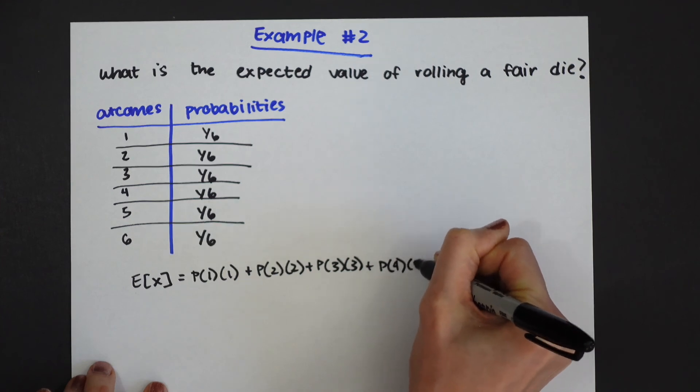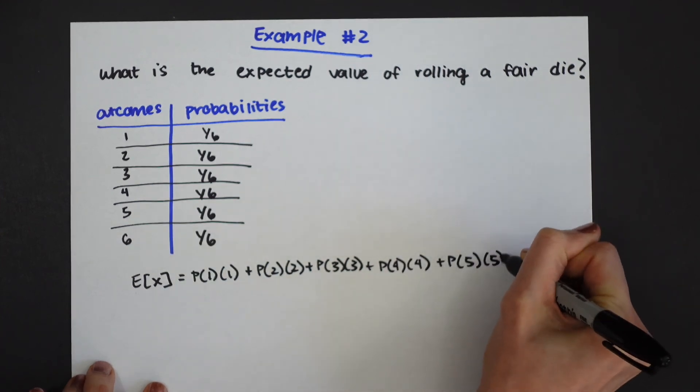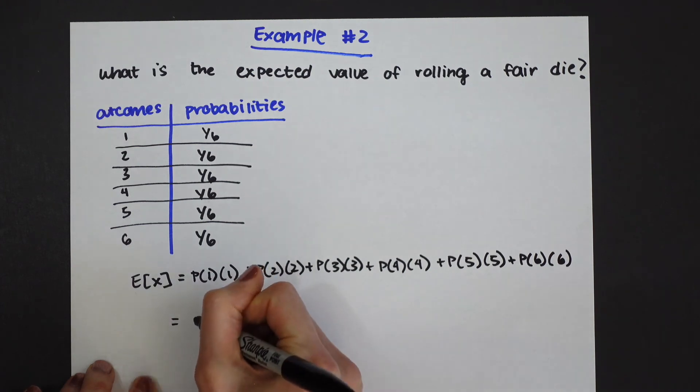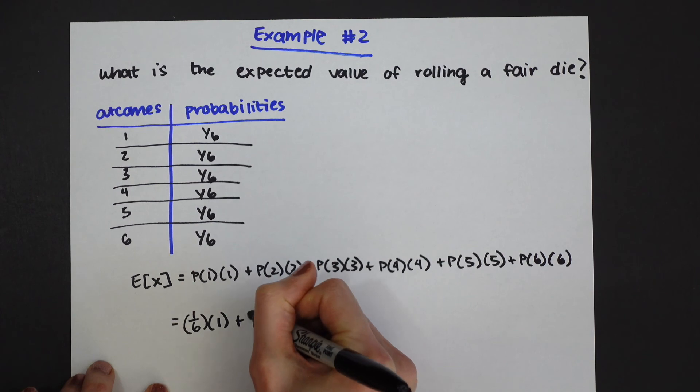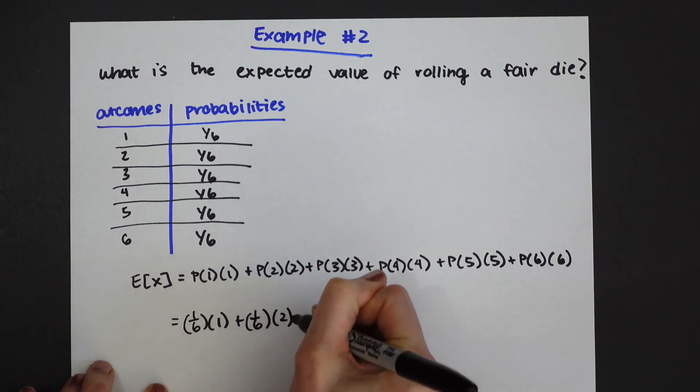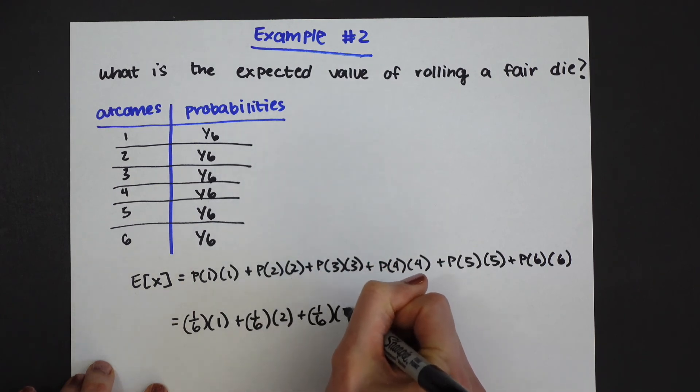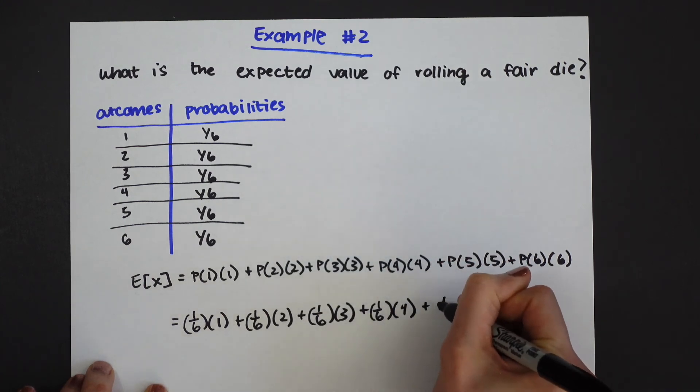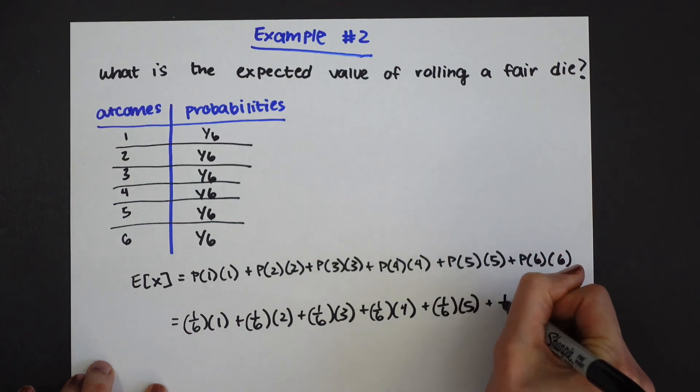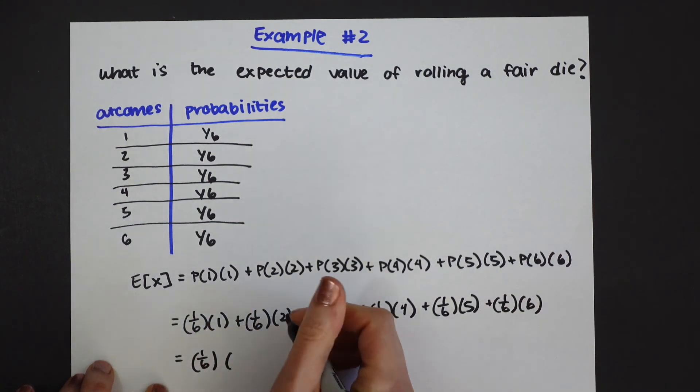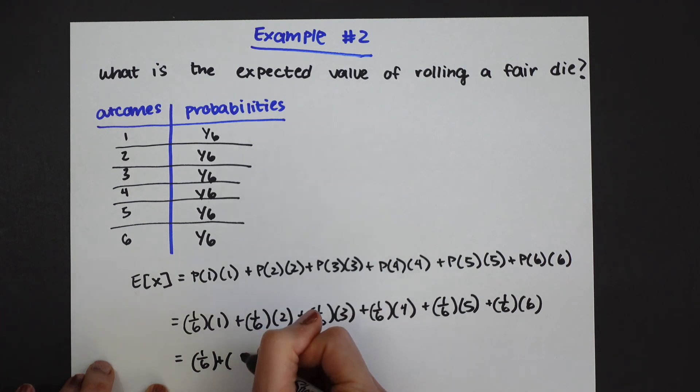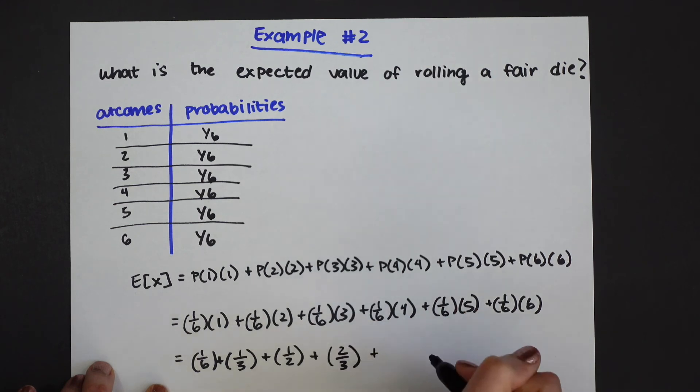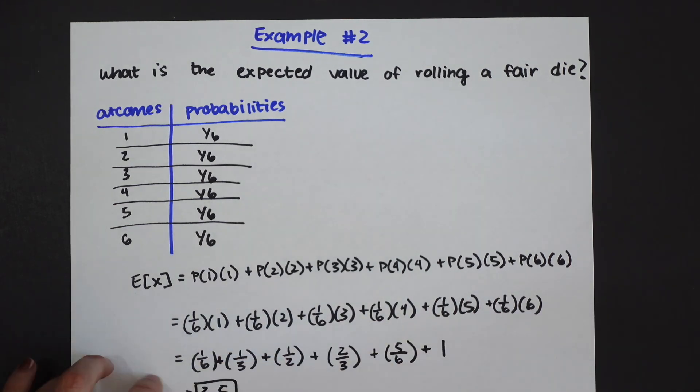So now let's fill in our formula this time with our probabilities of one sixth. We have one sixth times one plus one sixth times two... so when we plug this into our calculator we're going to get 3.5 and that's our answer.